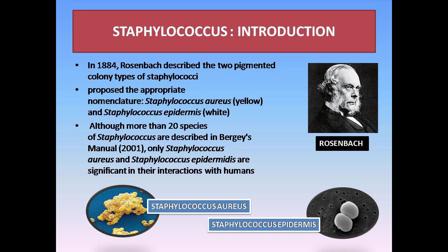Let's have an overview of Staphylococcus. Staphylococcus are gram-positive spherical bacteria that occur in microscopic clusters resembling grapes. Bacteriological culture of the nose and skin of normal humans invariably yields Staphylococcus. In 1884, Rosenbach described the two pigmented color types of Staphylococci and proposed the appropriate nomenclature.